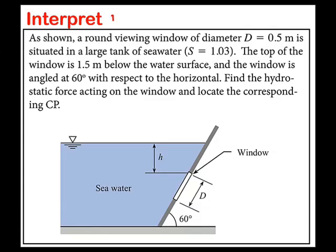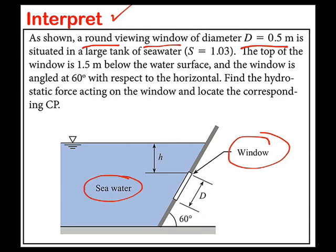I'll begin by interpreting the problem statement. We're looking at a round window. The diameter is one half of a meter and this window is loaded with seawater and the specific gravity of the seawater is 1.03.